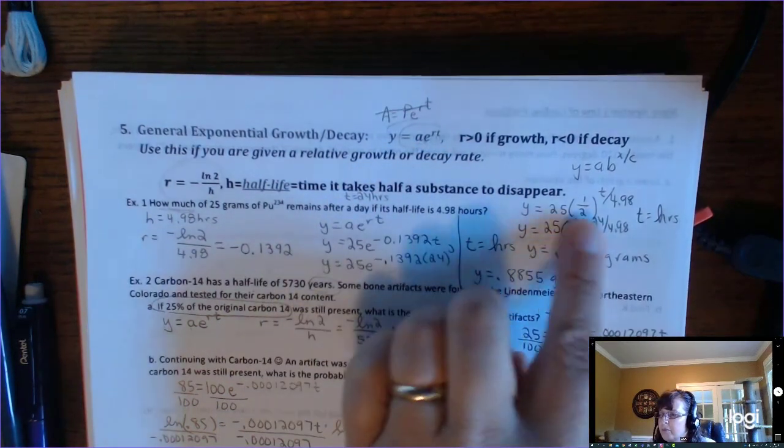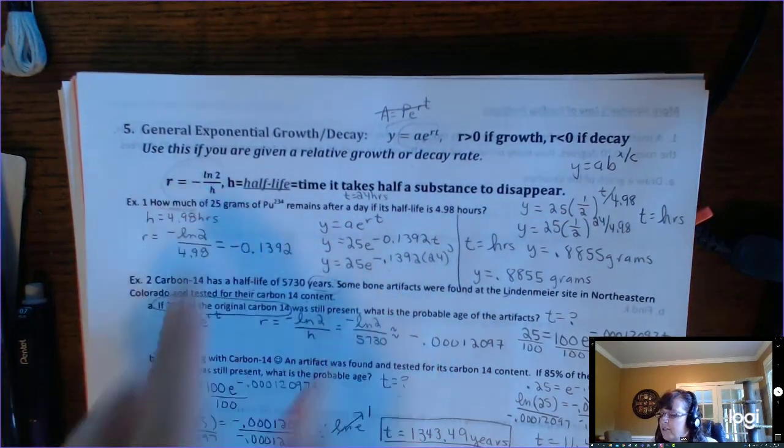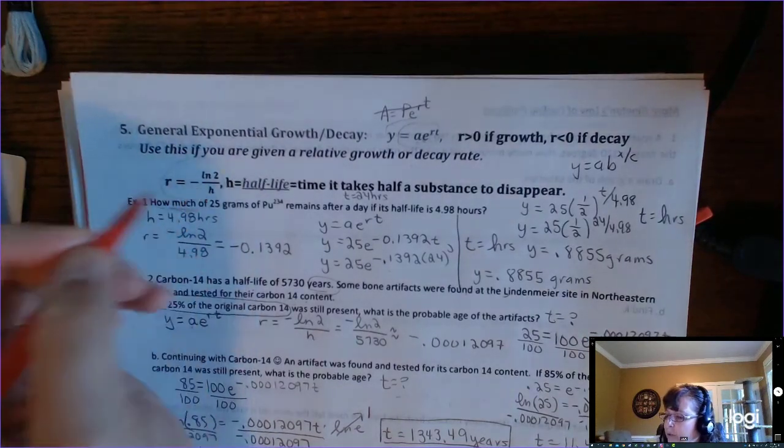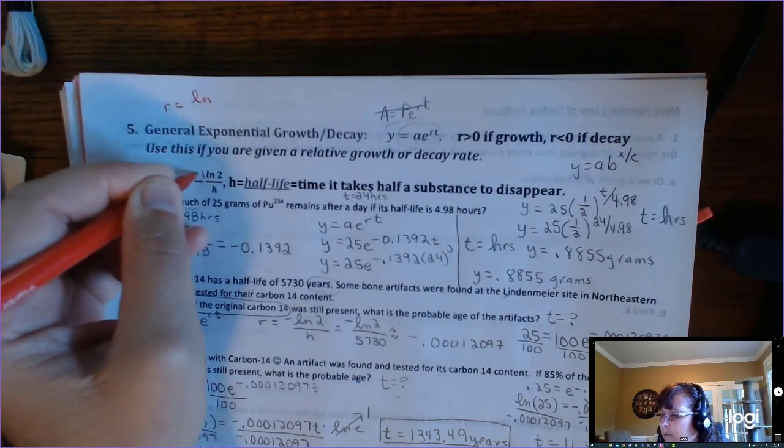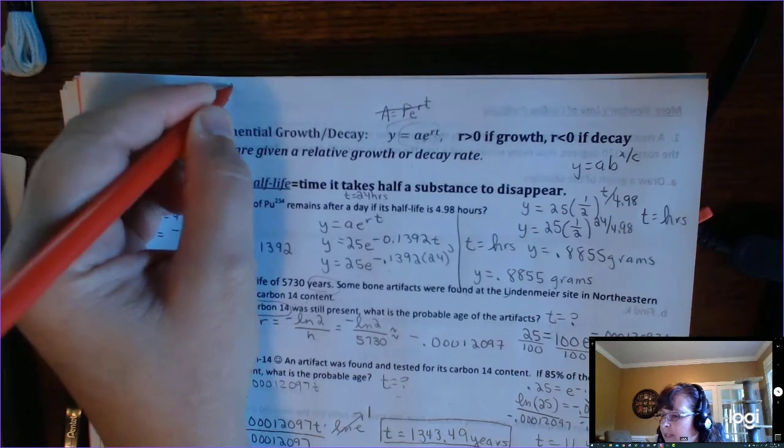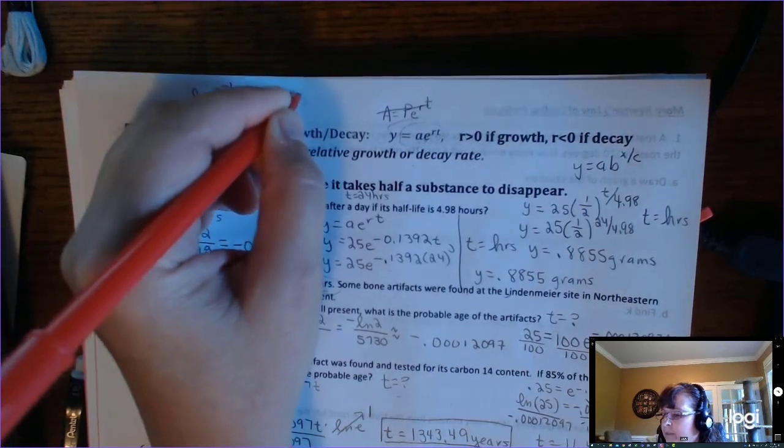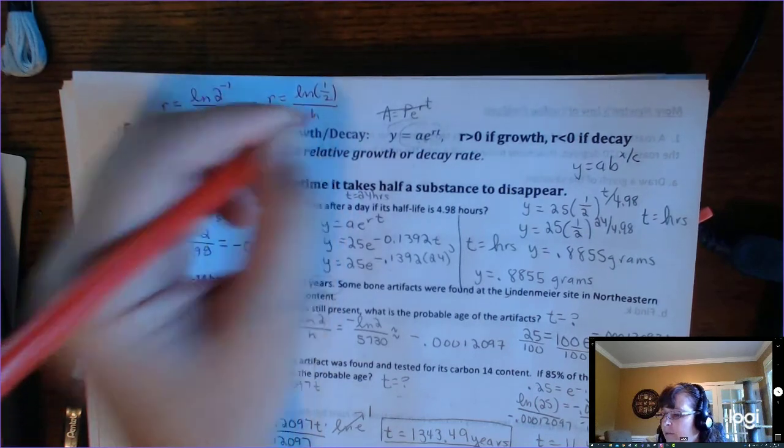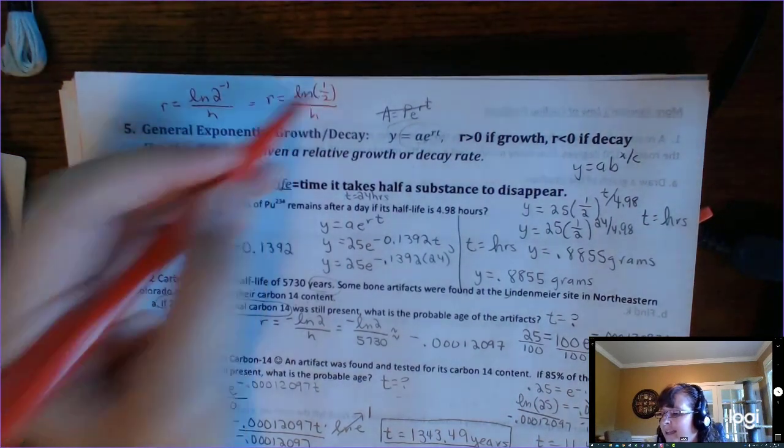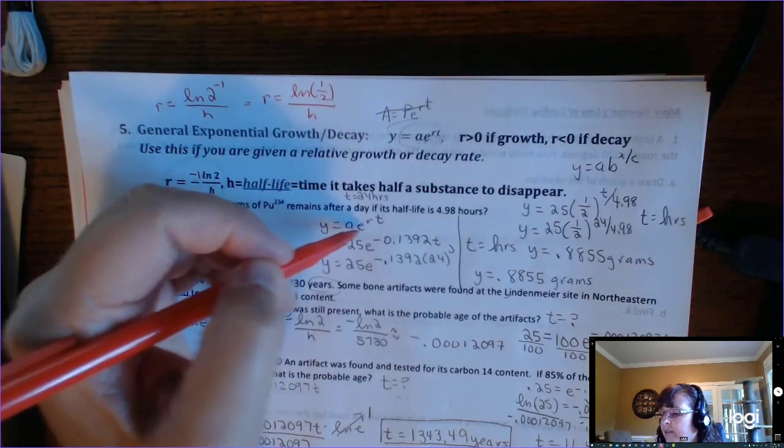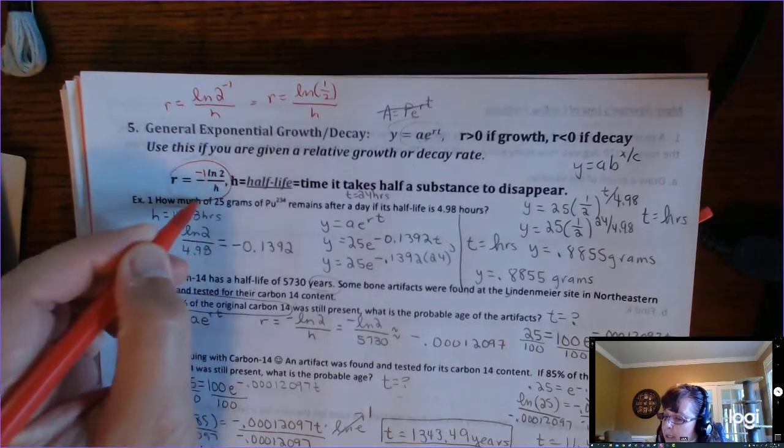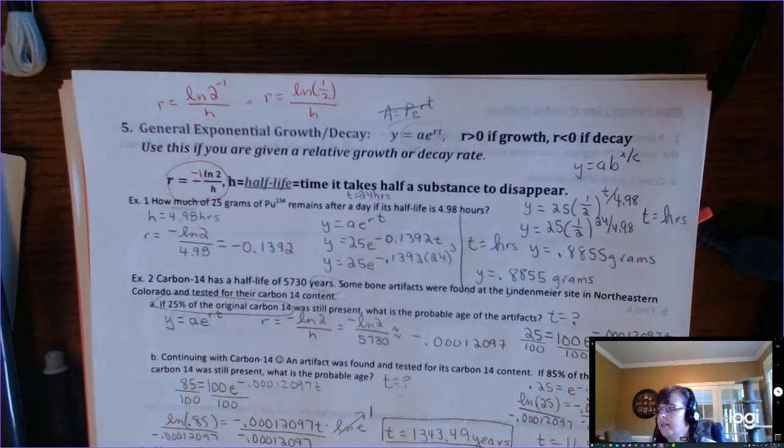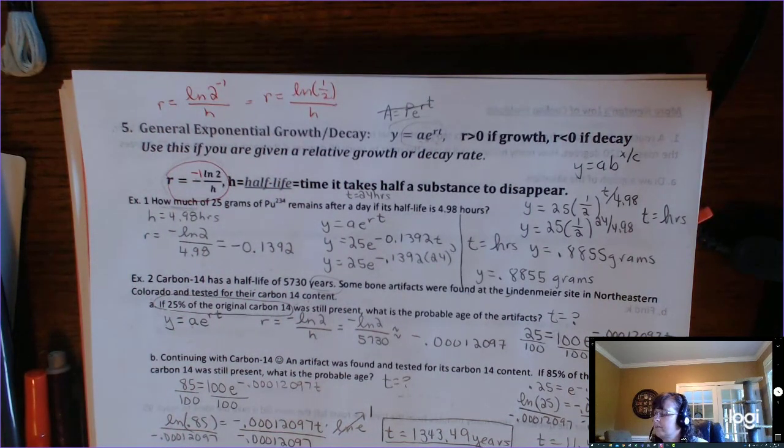Okay. So that's the general exponential decay. Y equals A, E, the R, T. Just remember, if it's half-life, R is equal to negative LN of 2 over H. What's going on there, that's the same thing as LN of 2 to the negative 1 over H, which is R equals natural log of 1 half over H. So that's half-life, and we're basically solving for R in general. That's where that formula comes in. But you have to memorize, if you're talking half-life with this formula, R is negative LN of 2 over H.